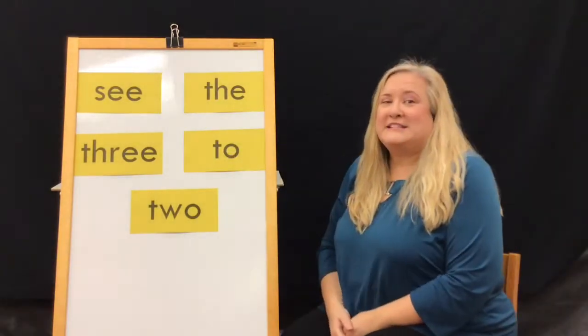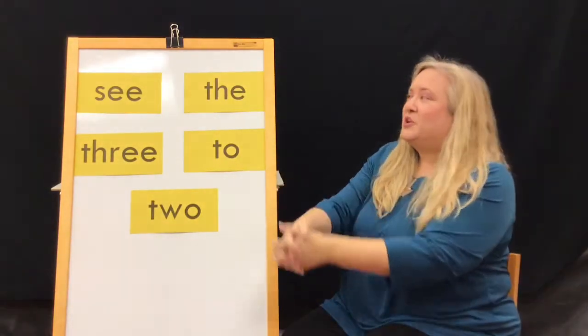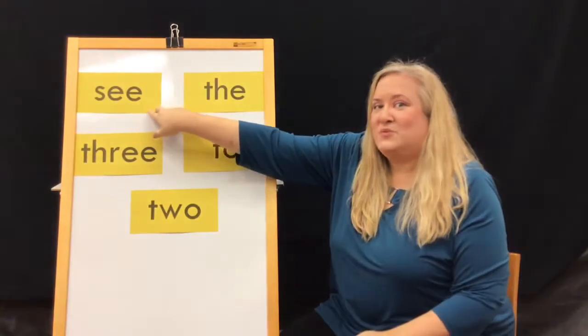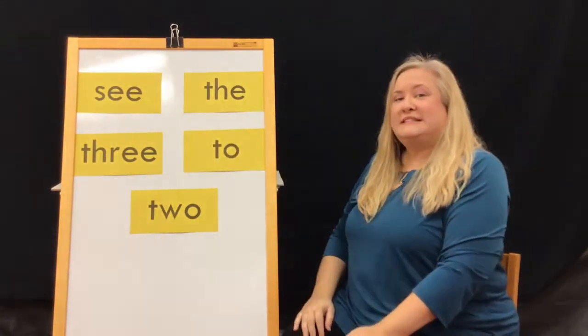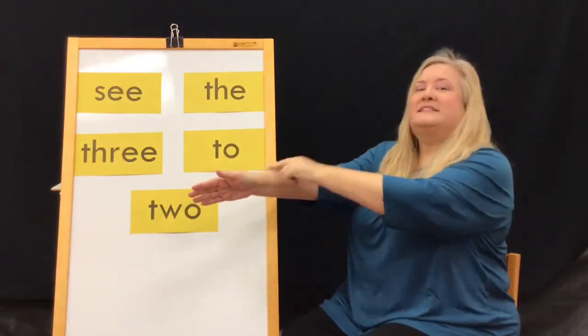Now we're going to practice something called arm tapping. So we're going to take our arms, clap it. Each word we read is left to right. So let's do the word see. S-E-E. See. S-E-E. See.